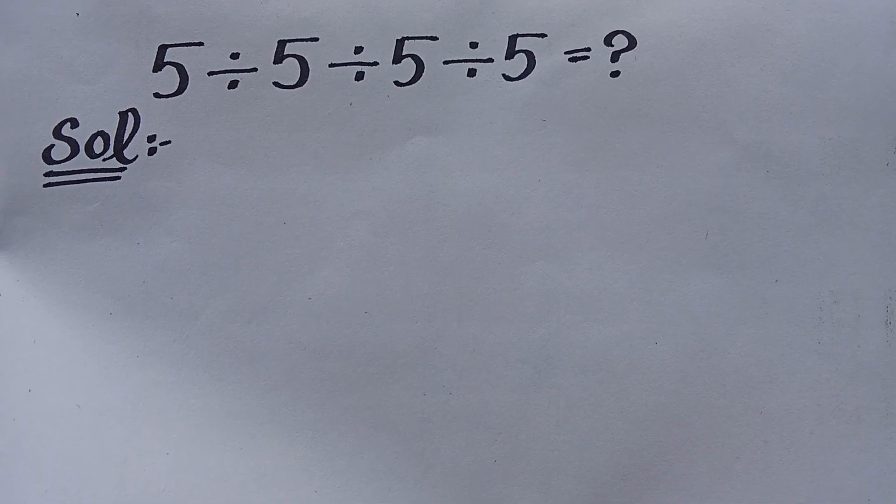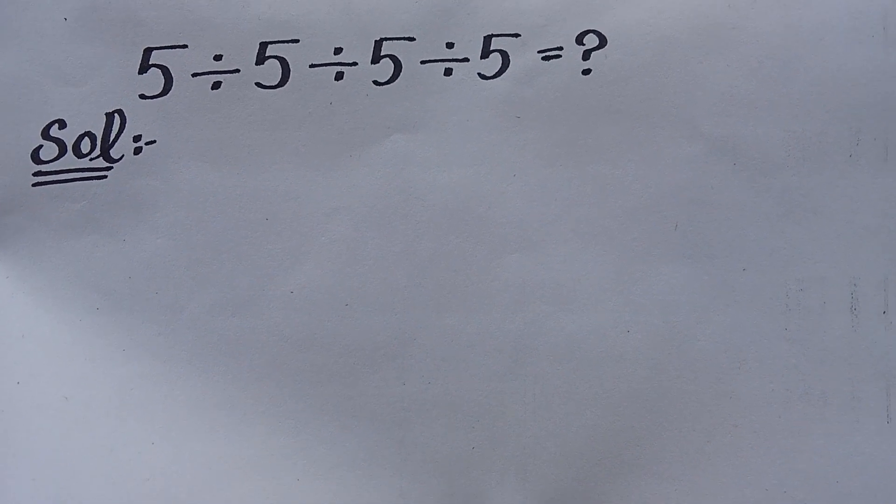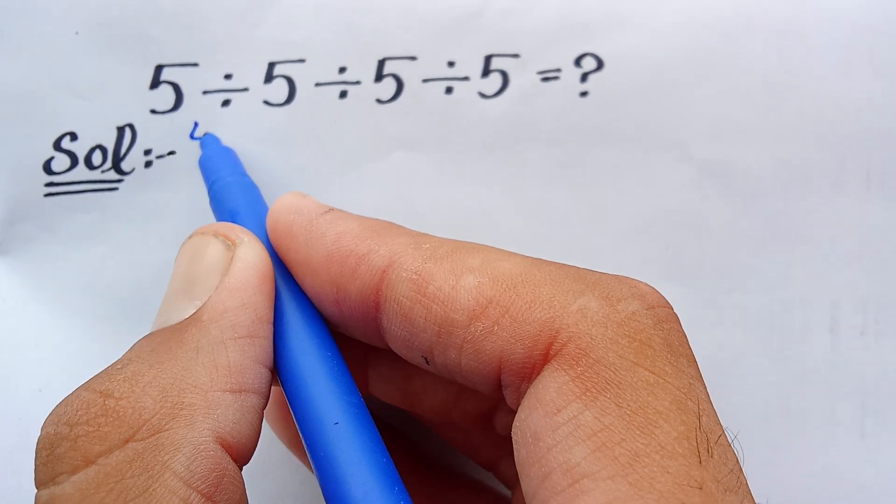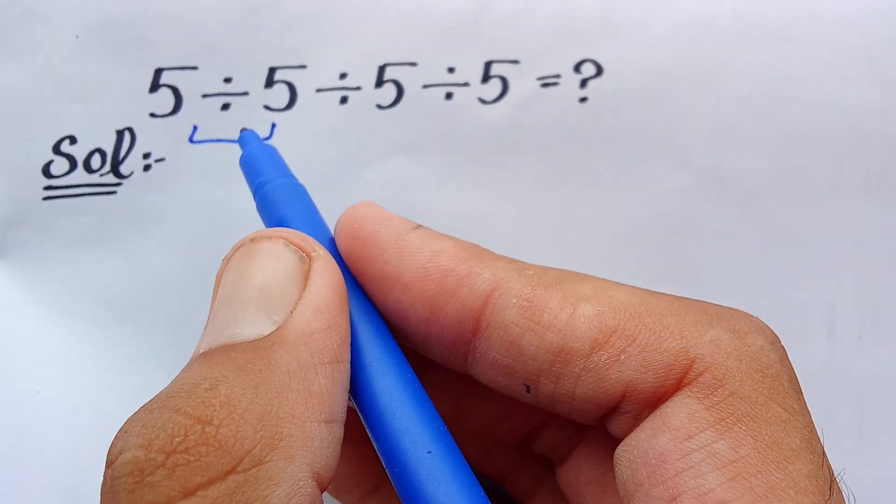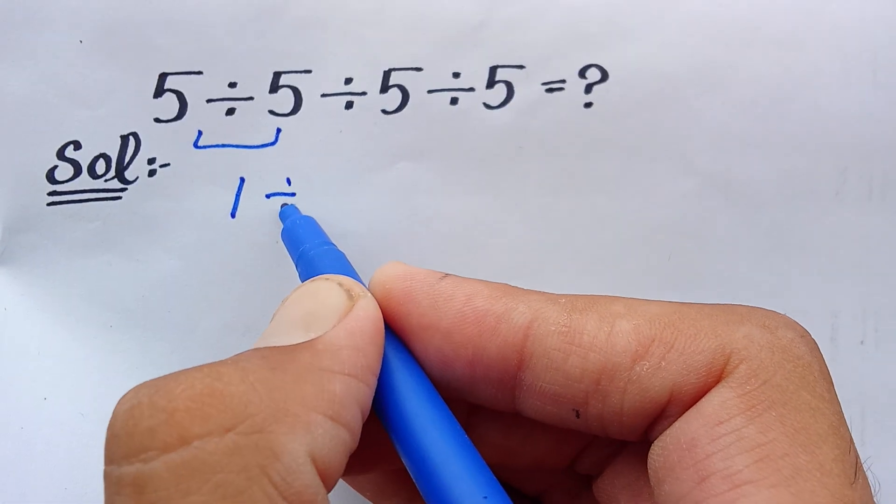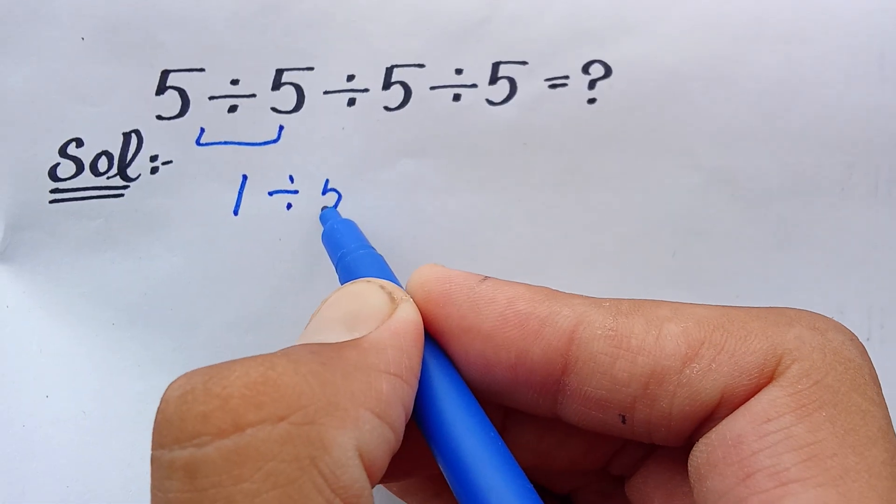So first of all, 5 divided by 5 is equal to 1. So I can write 5 divided by 5 is 1 divided by 5 divided by 5, I can write as it is.